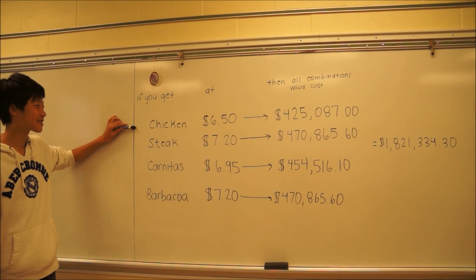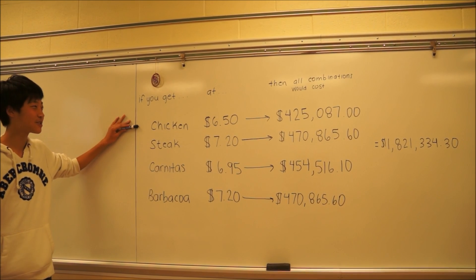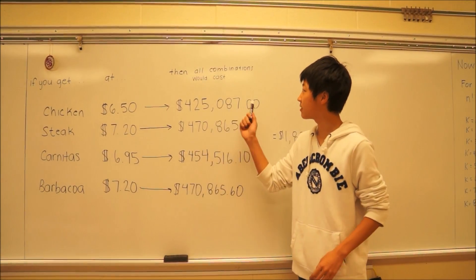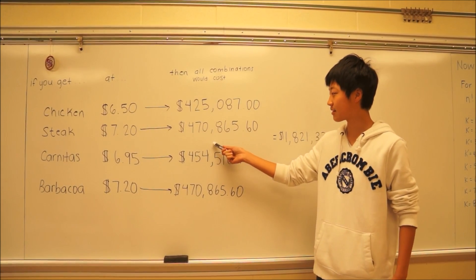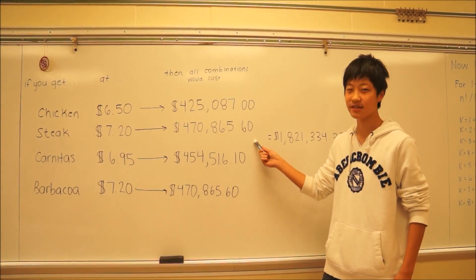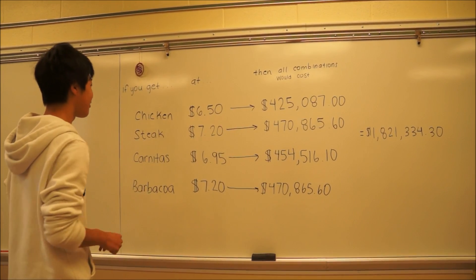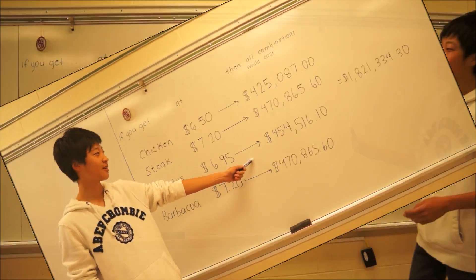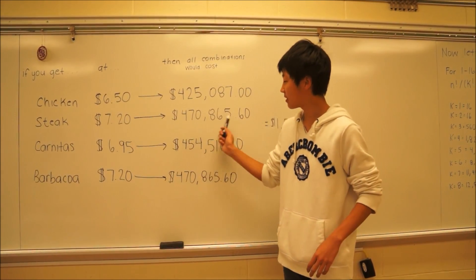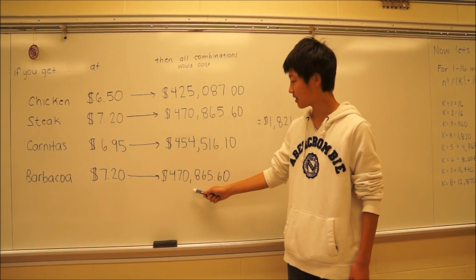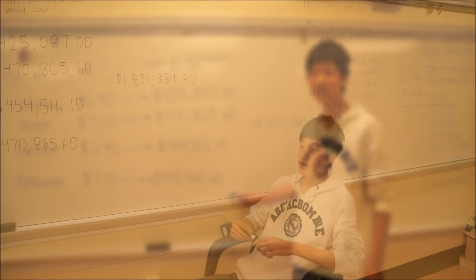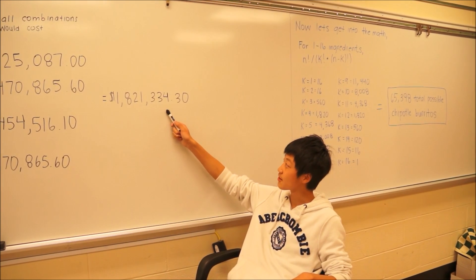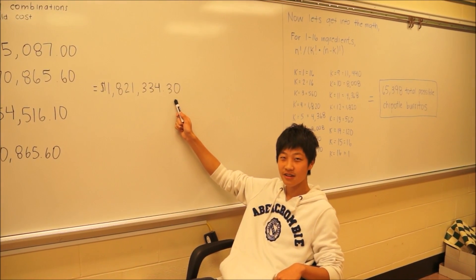If you get chicken at $6.50 per order, then all combinations would be affordable at $425,087. If you get steak at $7.20 per order, then all combinations will cost you $470,865.60. If you get carnitas at $6.95, then all combinations will cost you $454,516. If you get barbacoa at $7.20, then in total it will be $470,865.60. So in total, all of these will cost you $1,821,334.30. Thanks for watching.